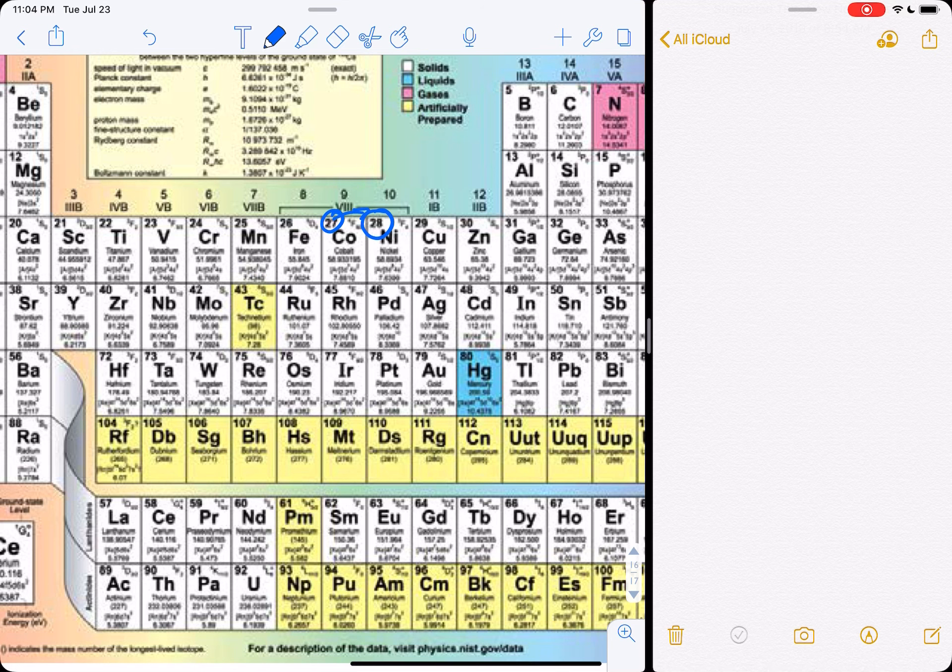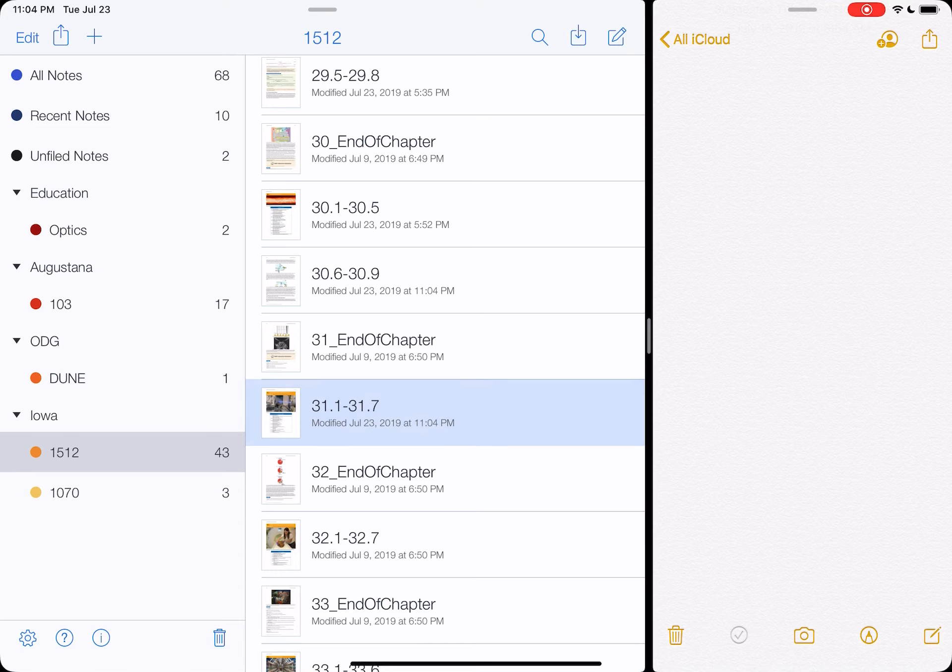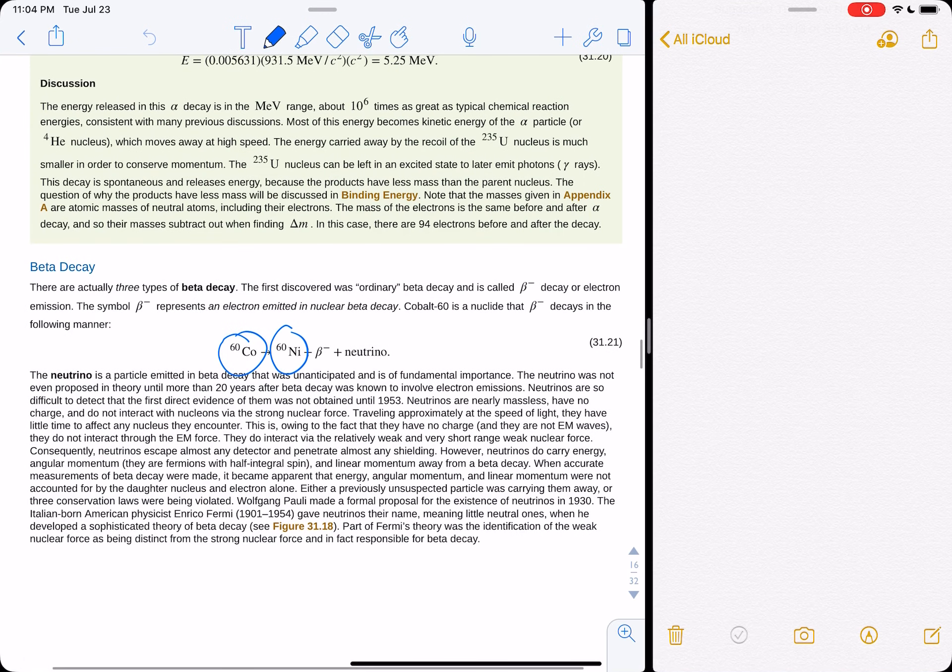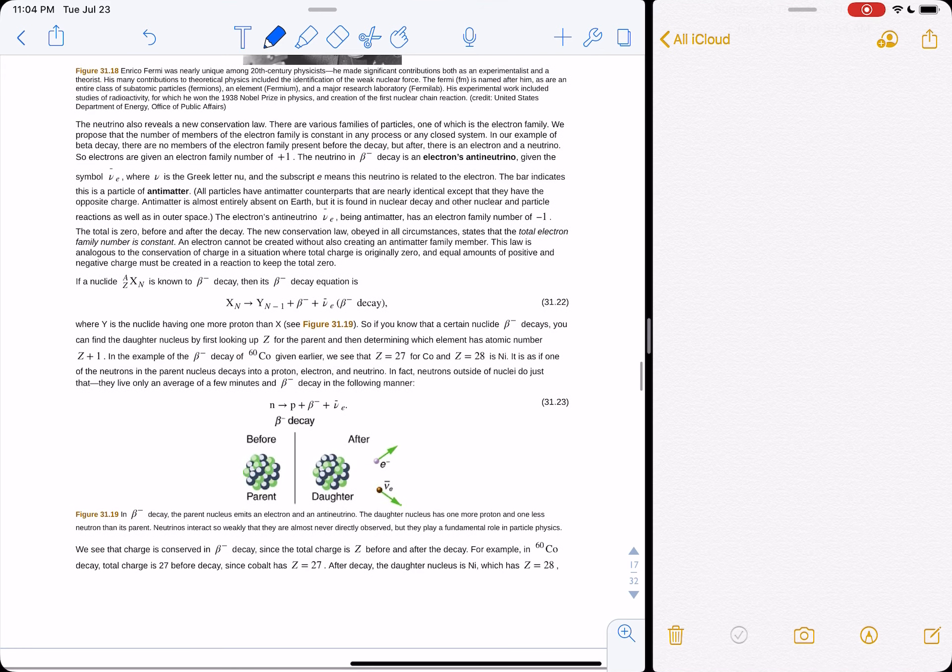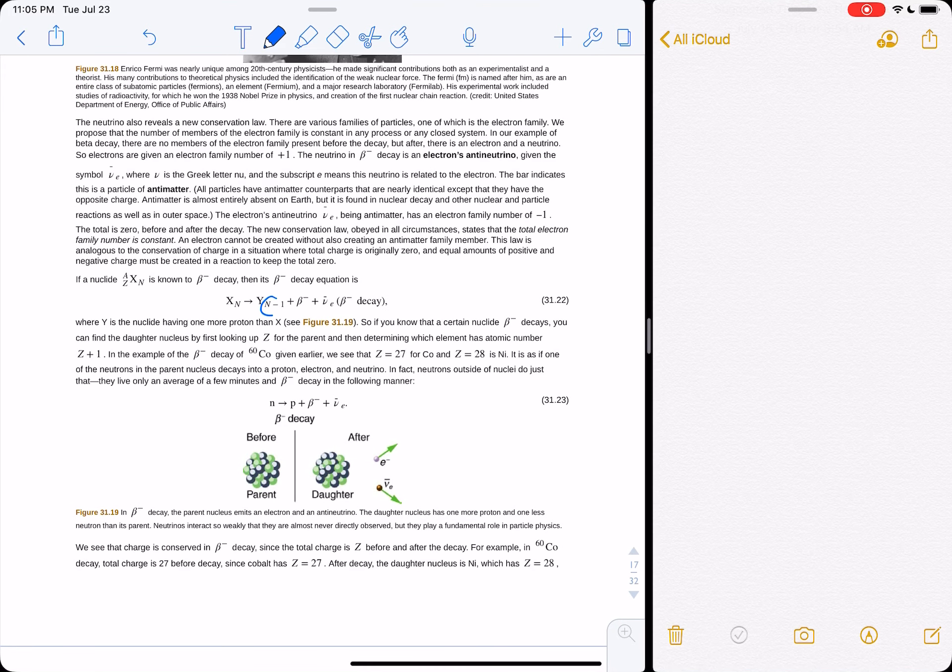What we have to do is turn one of the neutrons into a proton so that we gain a proton in order to change our atom. So what happens in beta decay is we actually keep the same number of total nucleons, we just transform one of the neutrons into a proton, and that's called beta decay. So beta decay is simply we're reducing the number of neutrons, turning it into a proton.